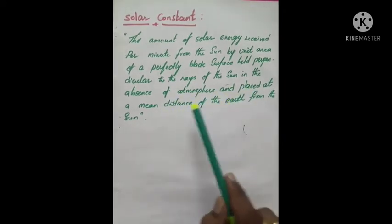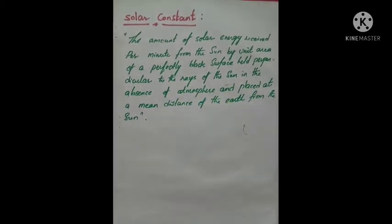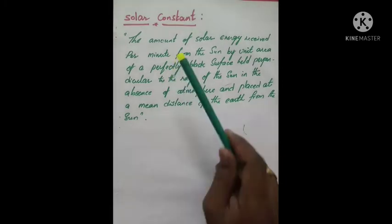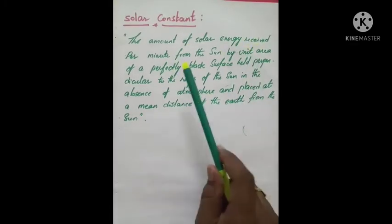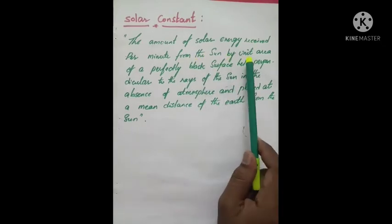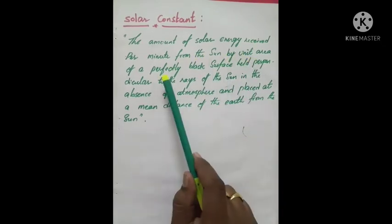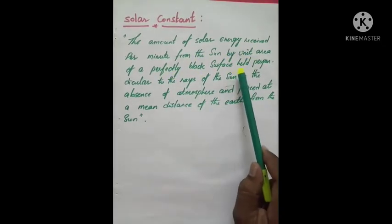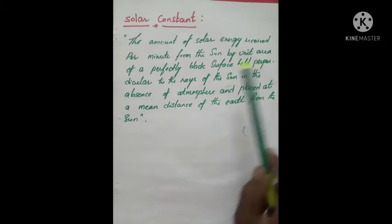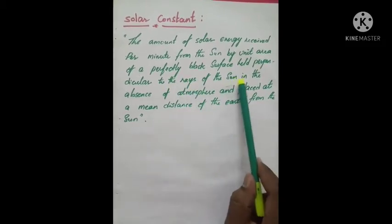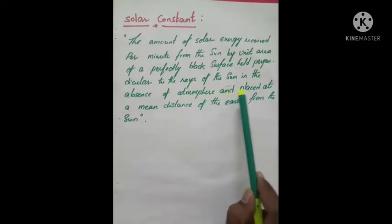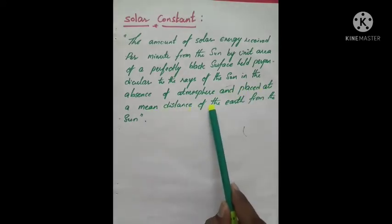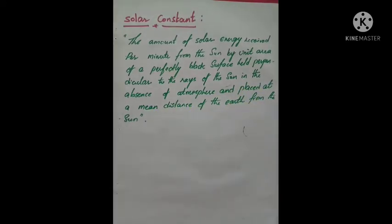To repeat: the amount of solar energy received per minute from the sun by unit area of a perfectly black surface held perpendicular to the rays of the sun in the absence of atmosphere and placed at a mean distance of the earth from the sun.